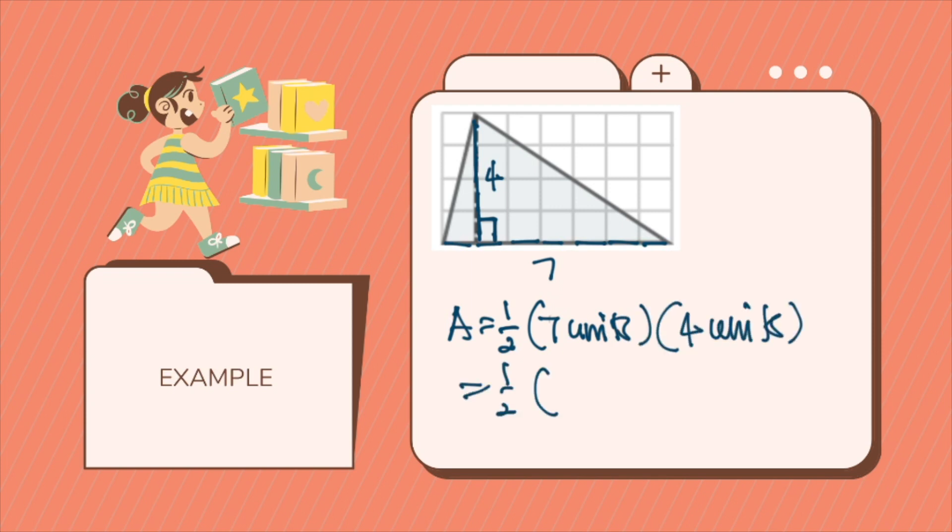And the height is four units. So we have one half. Seven times four is 28 units squared. And half of 28 will be 14 units squared, or square units.